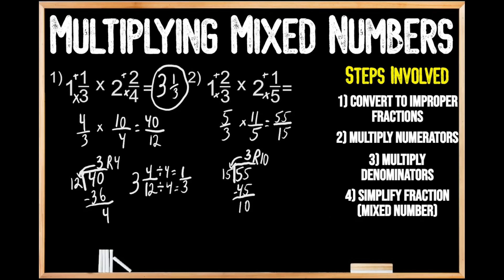We write out our mixed number: we had 3 whole groups of 15, so the whole number portion is 3. Our denominator hasn't changed — it's still 15 — and our remainder of 10 becomes our numerator. Just like in our last problem, we can simplify the fractional part. The whole number stays as 3, and since both 15 and 10 are multiples of 5, we divide both by 5. Dividing 15 by 5 gives us 3, and 10 by 5 gives us 2, for 2 thirds. So when we multiply 1 and 2 thirds times 2 and 1 fifth, we get 3 and 2 thirds in its lowest possible terms.